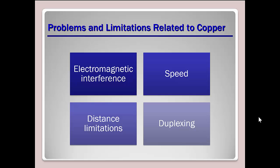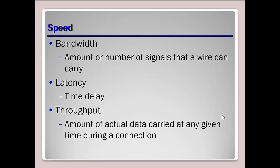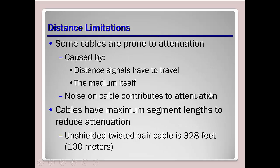Electromagnetic interference, speed, distance limitations, and duplexing all affect copper cabling. EMI — two wires next to each other create a magnetic field, resulting in noise that limits quality; it can cause attenuation, crosstalk, and security issues. For speed, we consider bandwidth, latency (time delay), and throughput (actual data carried). The distance limitation for unshielded twisted pair is 328 feet or 100 meters — beyond that, the signal must be boosted.